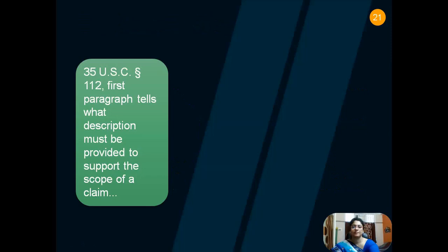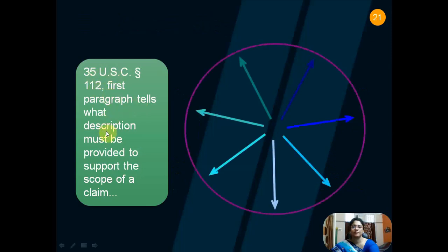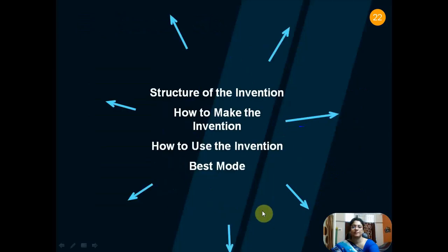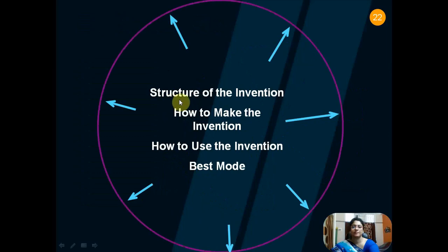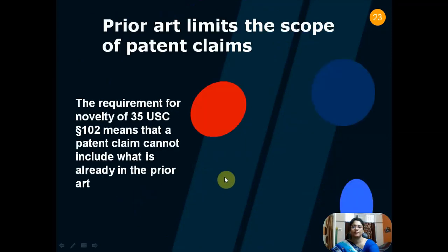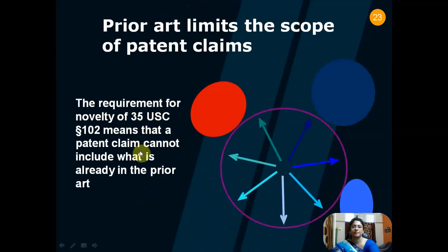As per 35 US Code 112, the first paragraph tells what description must be provided to support the scope of a claim. We should concentrate on: the structure of the invention, how to make the invention, how to use the invention, and what are the best modes possible for the invention. Prior art limits the scope of patent claims. The requirement for novelty under 35 US Code 102 means that a patent claim cannot include what is already in the prior art.